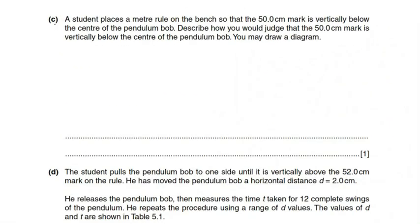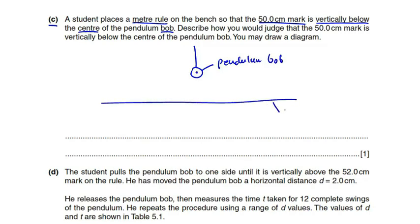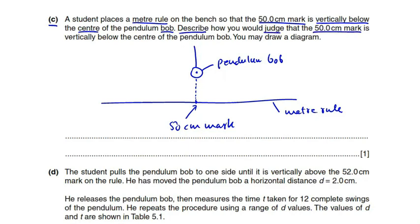Part c says a student places a meter rule on the bench so that the 50 centimeter mark is vertically below the center of the pendulum bob. So if this is the pendulum bob, this is the center of the bob, and this is the meter rule placed on the bench, then the 50 centimeter mark is here vertically below the center of the pendulum bob.